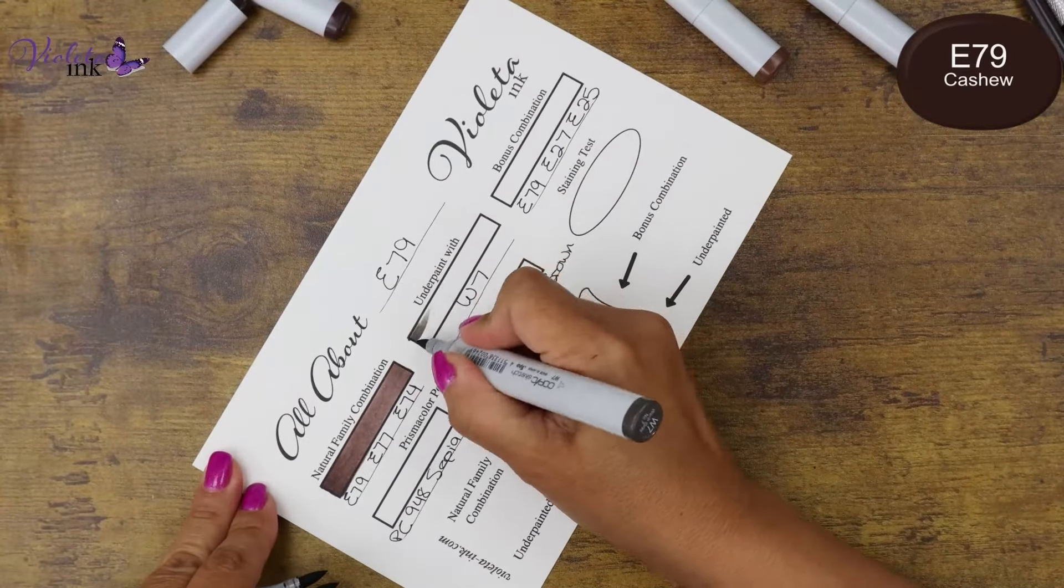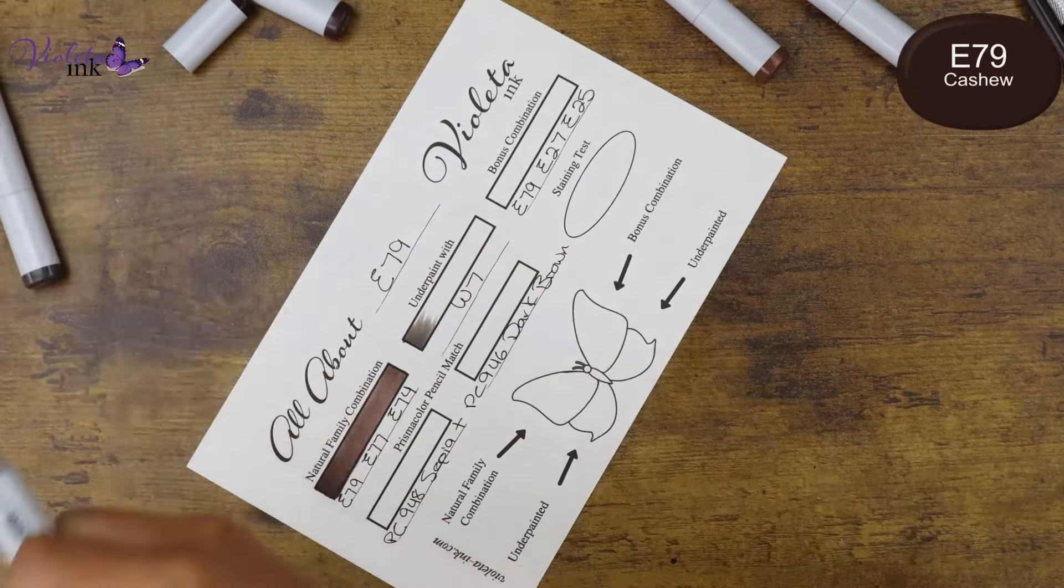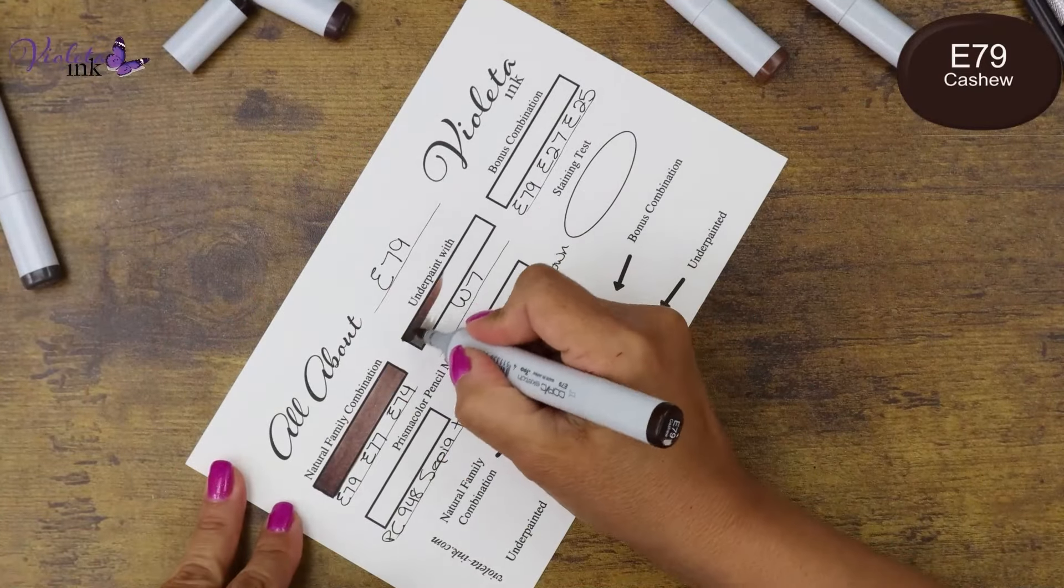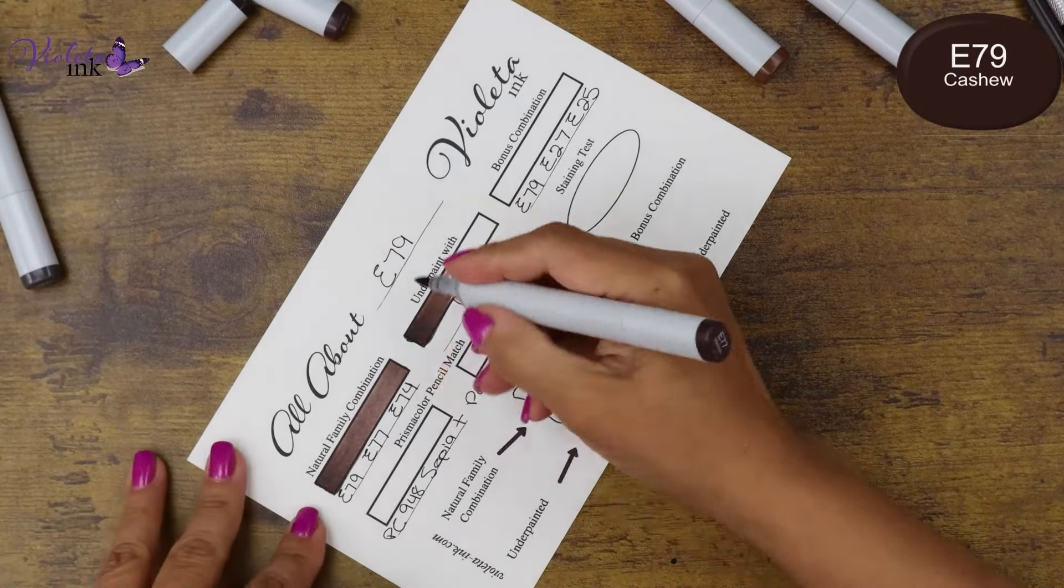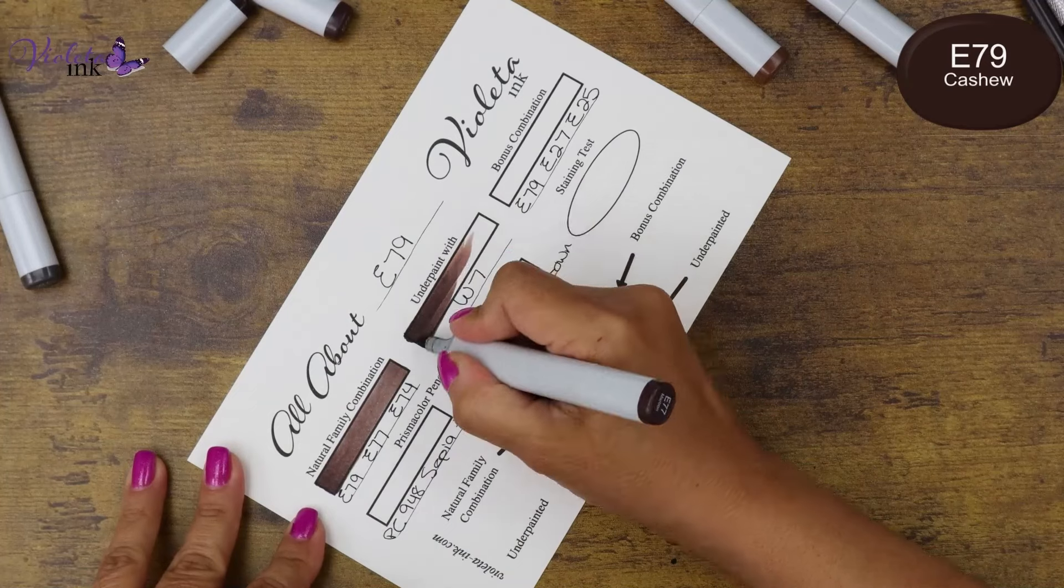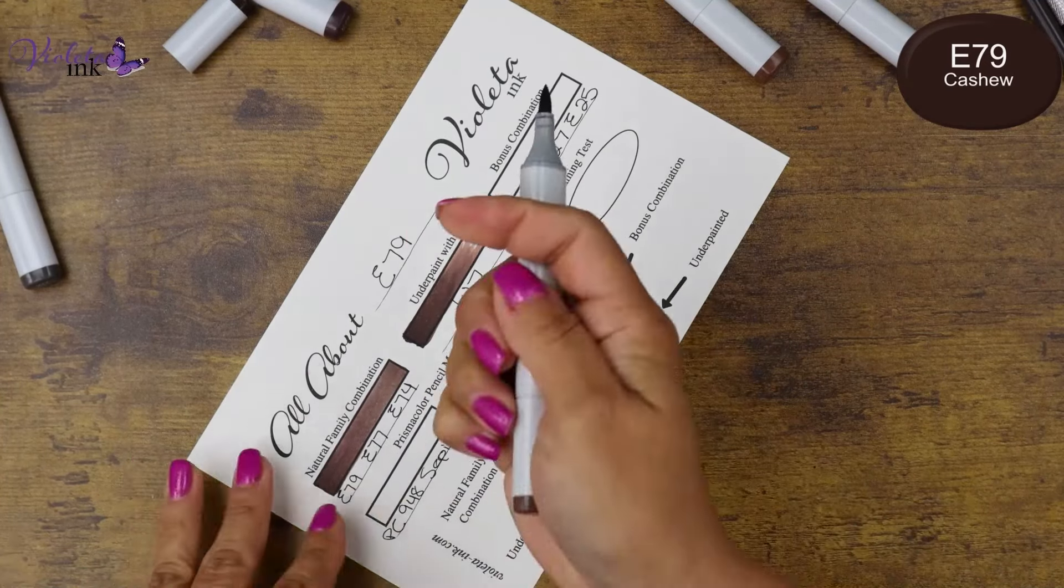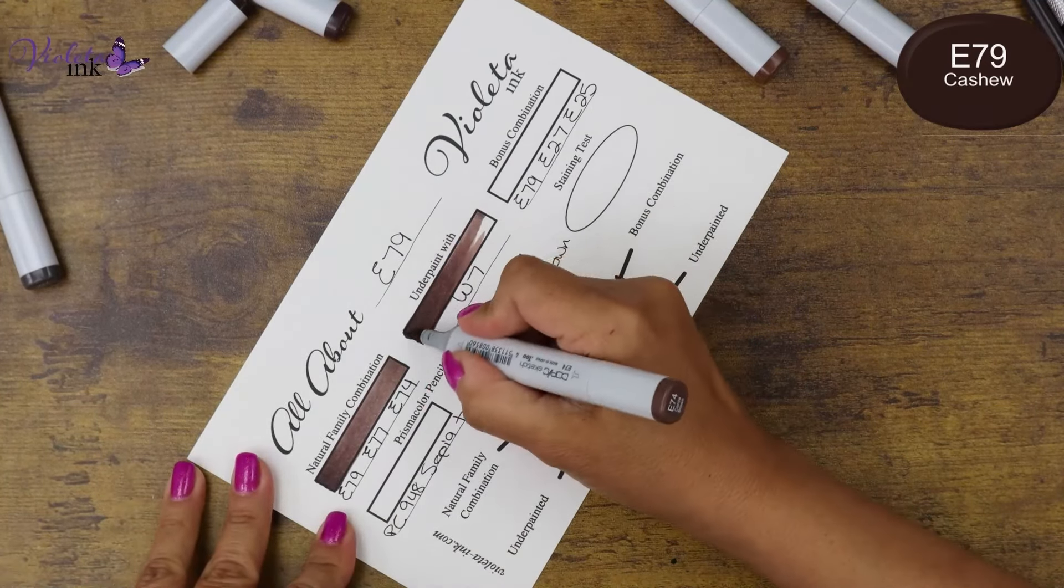We're underpainting with W7. W is going to give us a kind of warm gray, so I thought that would be nice. So on top of it was E79, E77 and E74.